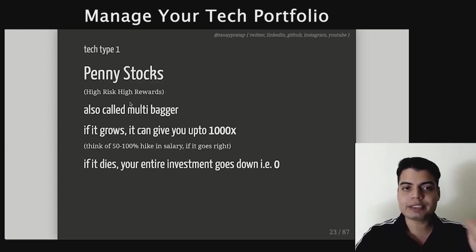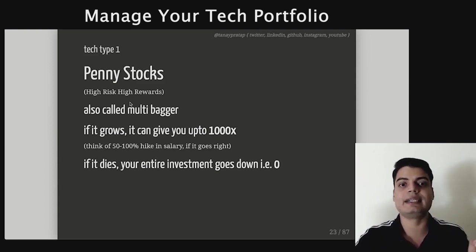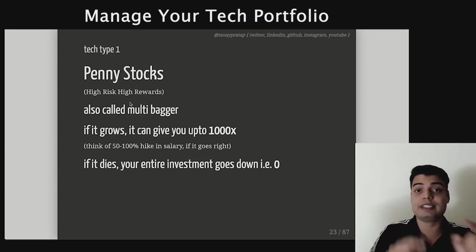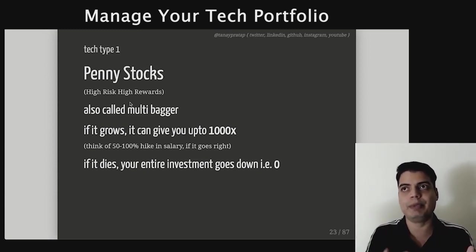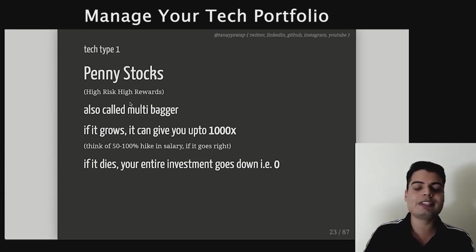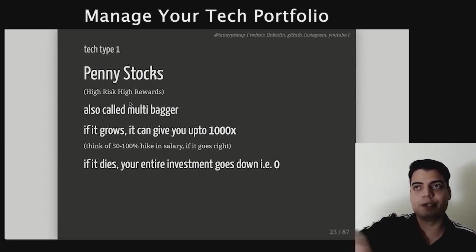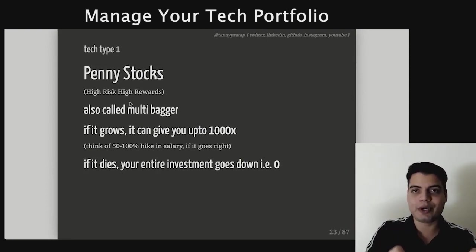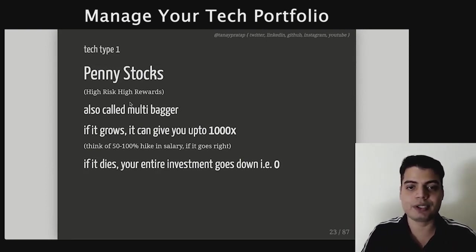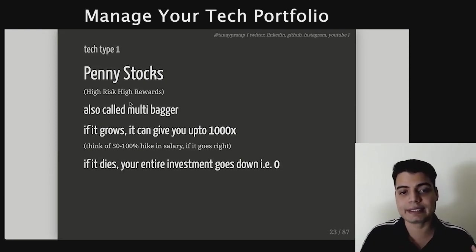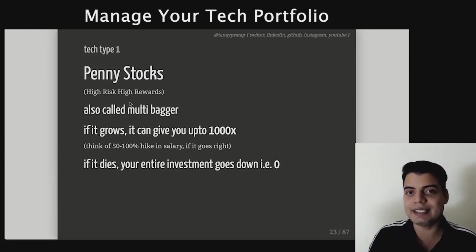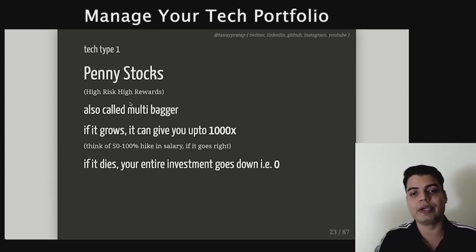The first kind of stock is penny stocks — high risk, high rewards. You take a lot of risk and you get a lot of reward. This is where most people who are new to the industry play. It's also called multi-bagger because if it grows, it can give you up to 1000x — think of it like a 50 to 100% hike in salary. But if it dies, your entire investment goes down.